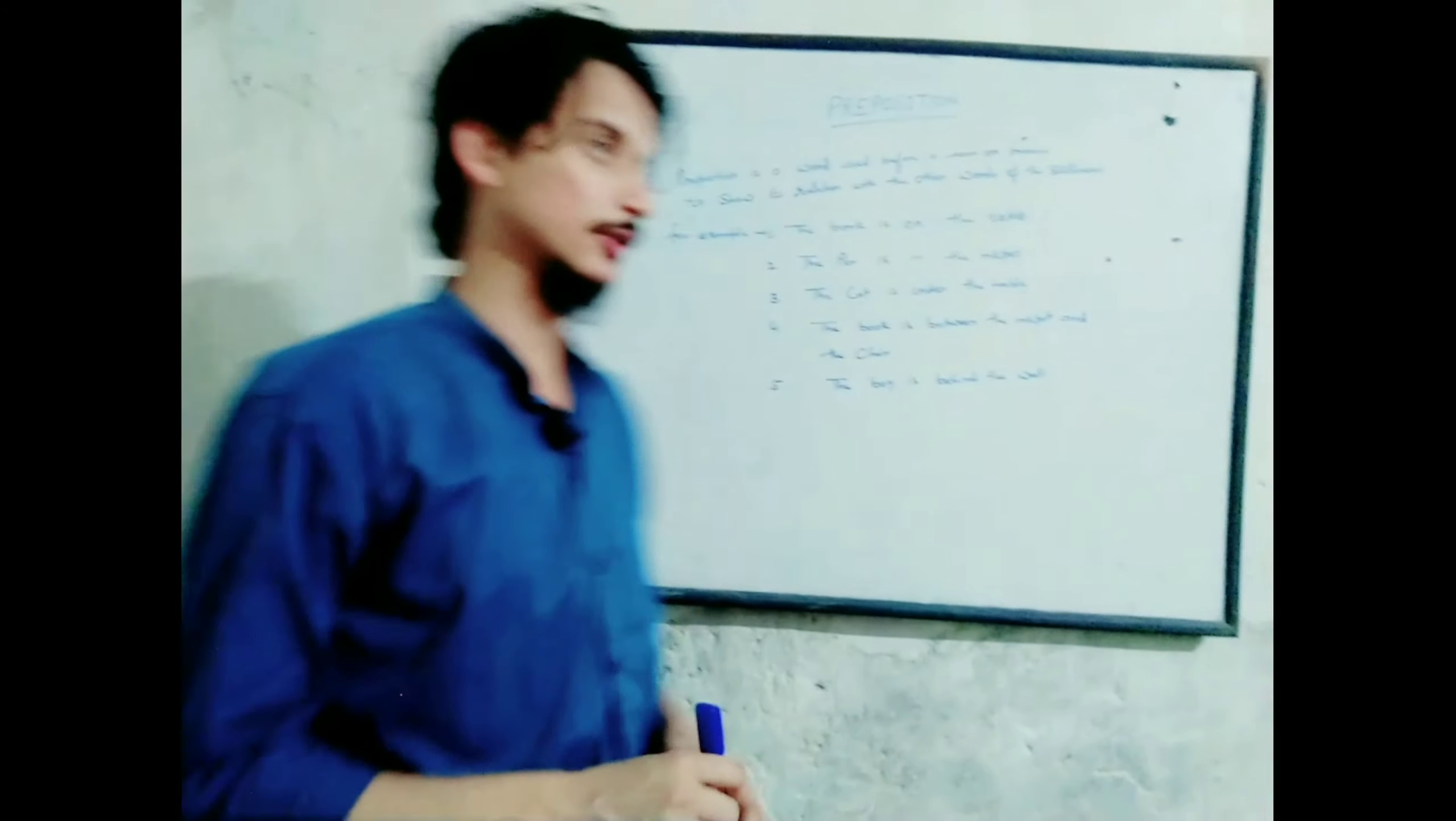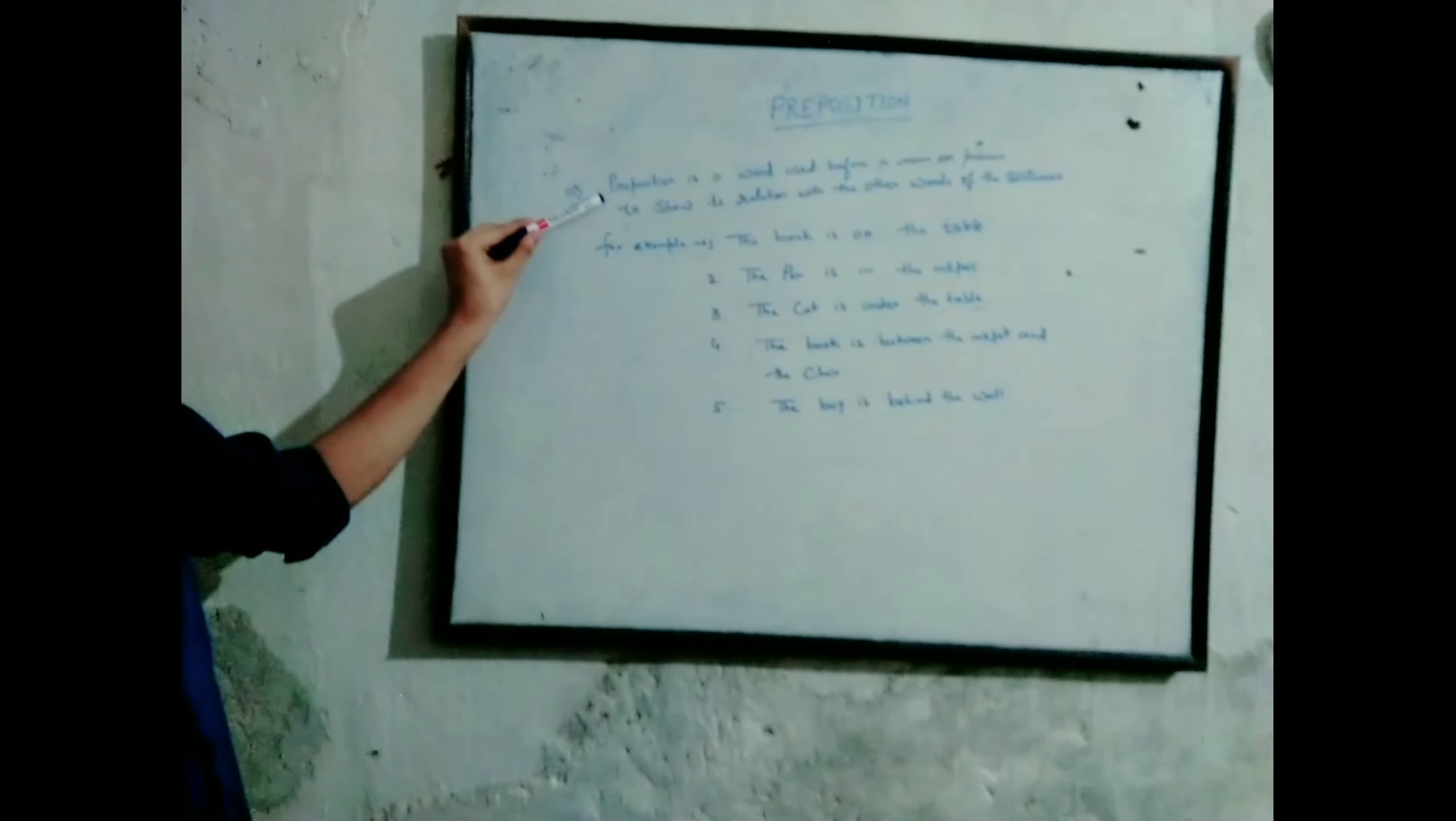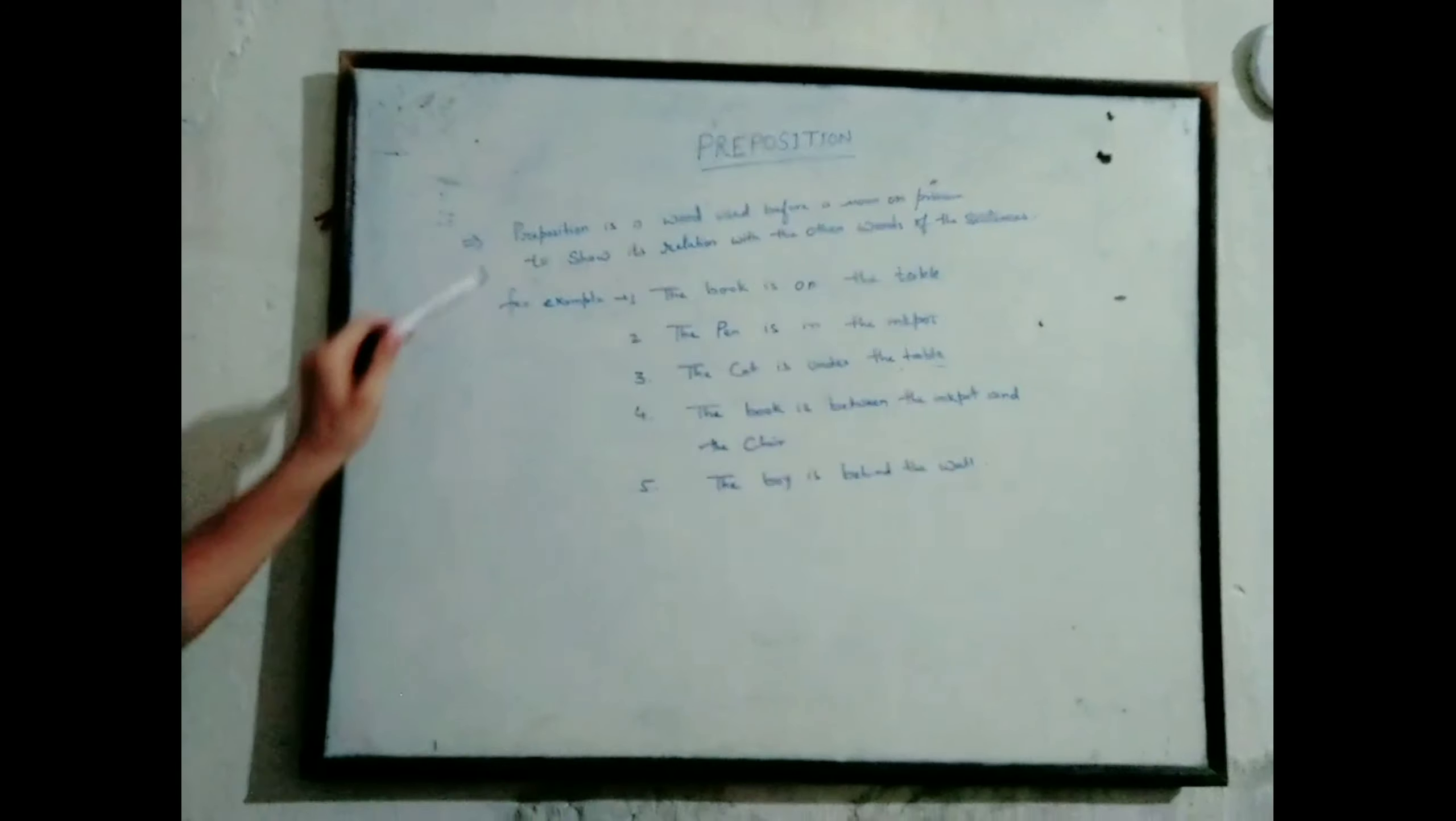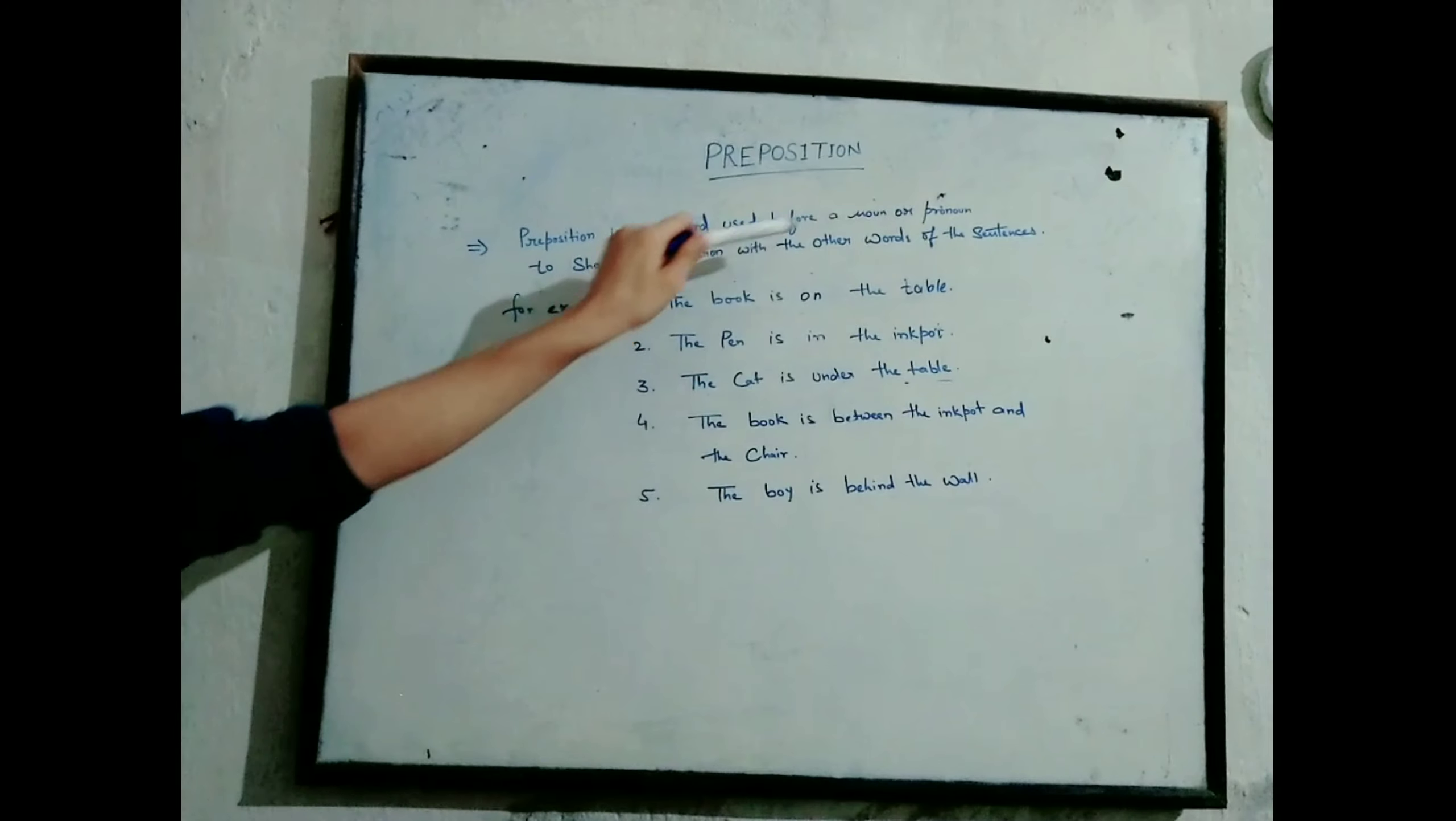Let's start with the definition of preposition. Preposition is a word used before a noun or pronoun to show its relation with the other words of the sentence.